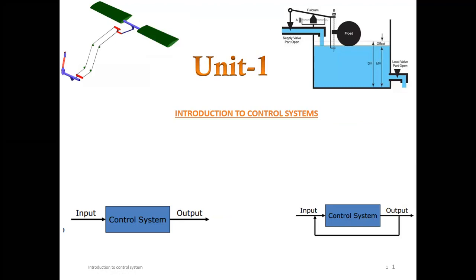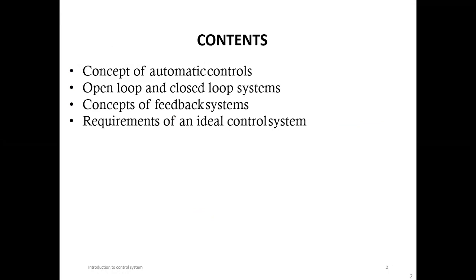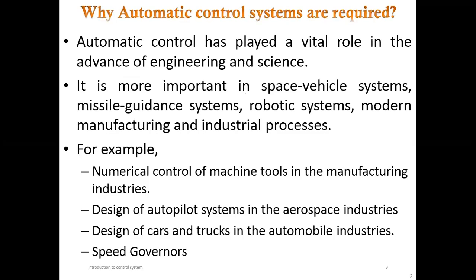Today we will study an introduction to control systems. On the screen, different control system figures are shared for orientation. The course contents will cover the concept of automatic controls, open loop and closed loop, concept of feedback, requirements of an ideal control system, and why automatic control systems are required — why we cannot rely on complete manual systems.